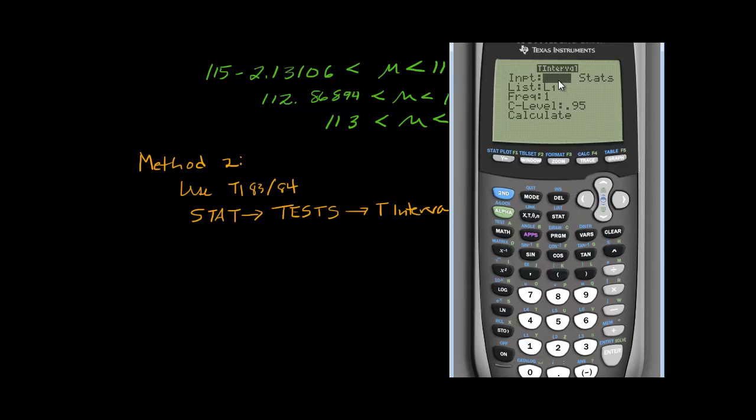Now it's blinking on data, but I also can select Stats. If I had the raw data in a list in my calculator, then I would highlight data, but I don't. All I have are the statistics. I have the sample mean and the sample standard deviation. So stats, I'll enter that, and notice that the list went away. Mean, our mean was 115. Our sample standard deviation was 10. Our sample size was 150. Our confidence level was 99%.